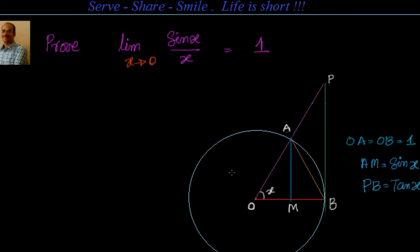Hello friends, welcome back. In this session, let's look at how to prove that the limit of sin x by x as x tends to 0 is equal to 1. For that, we will use the sandwich theorem, as mentioned in the last session. We will also take the help of a unit circle to go ahead with the proof.